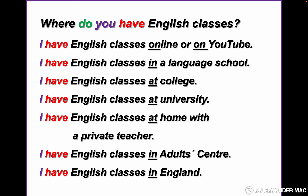In the previous sentences we had 'what,' now we have 'where.' Where do you have English classes? I have English classes online or on YouTube. I have English classes in a language school. I have English classes at college. I have English classes at university. I have English classes at home with a private teacher.